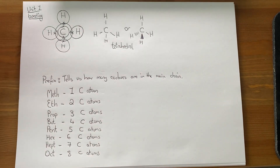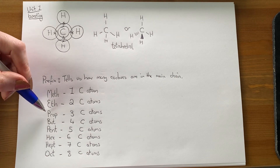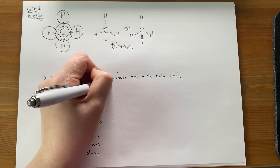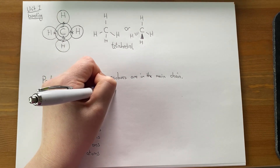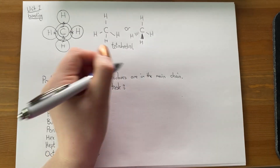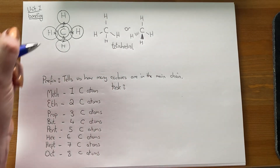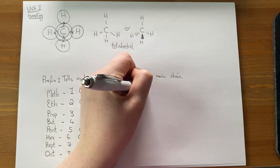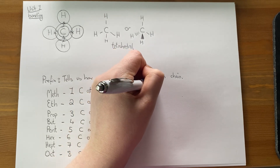So if I said I had something called propane, the prefix 'prop' tells you three, so the main chain has three carbon atoms. Your task is to come up with a sentence or word to help you remember the order of the prefixes — meth, eth, prop, but, pent, hex, hept, oct.